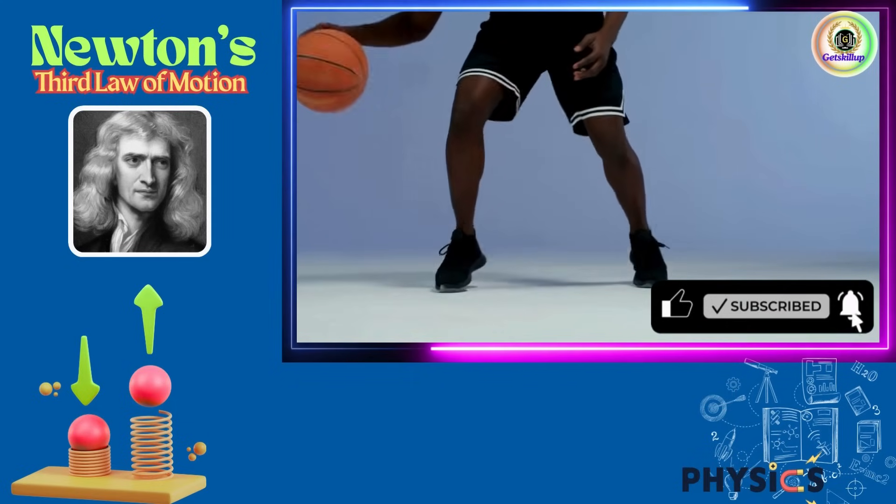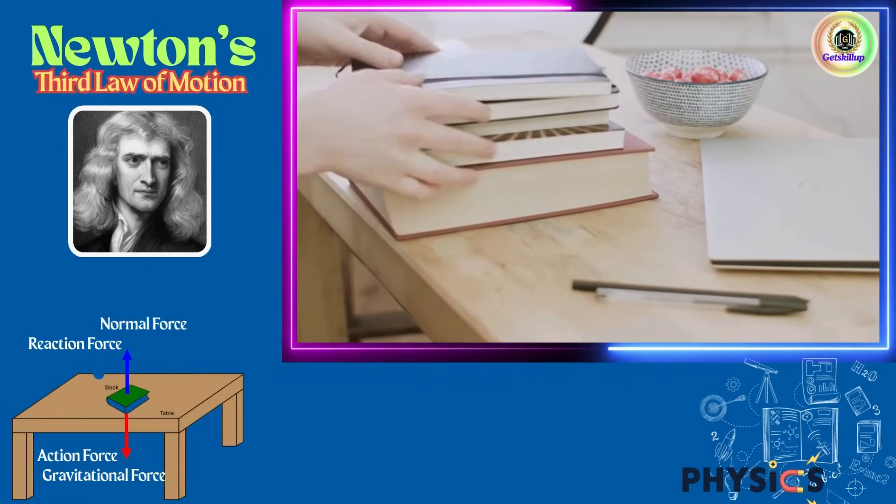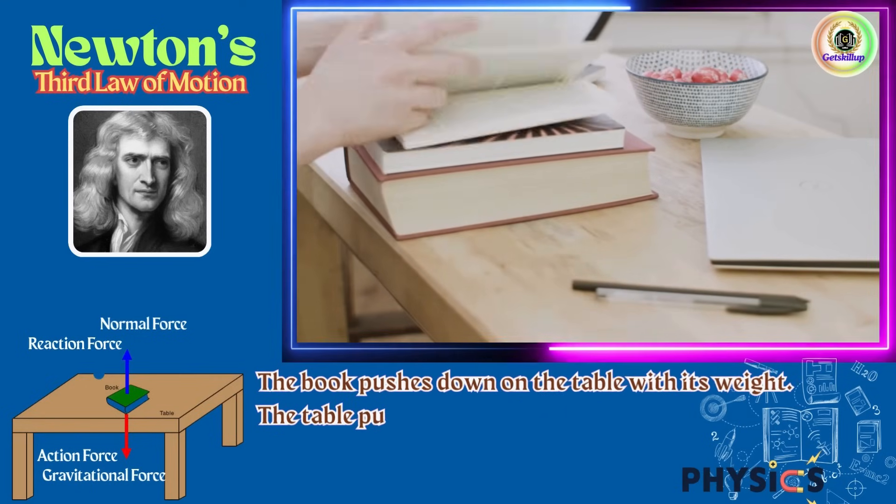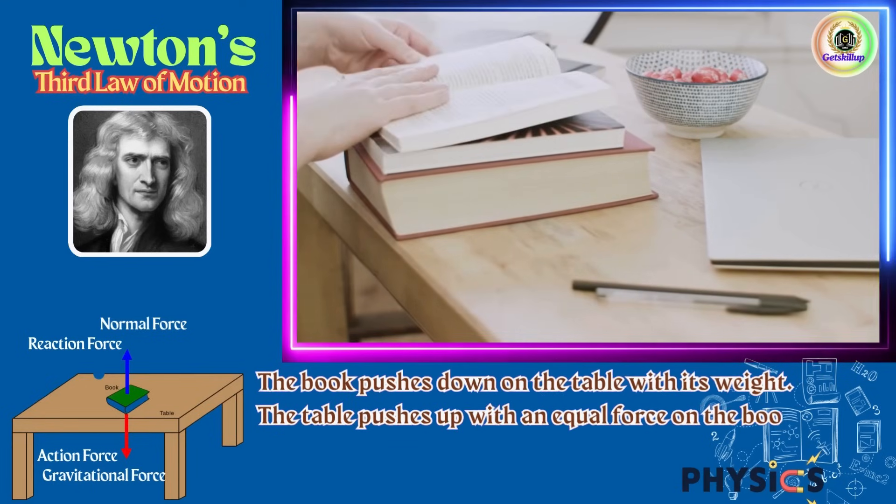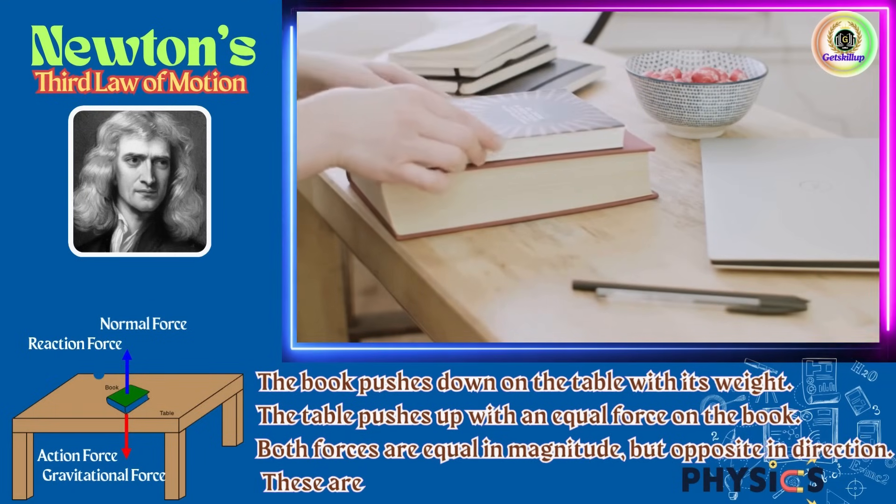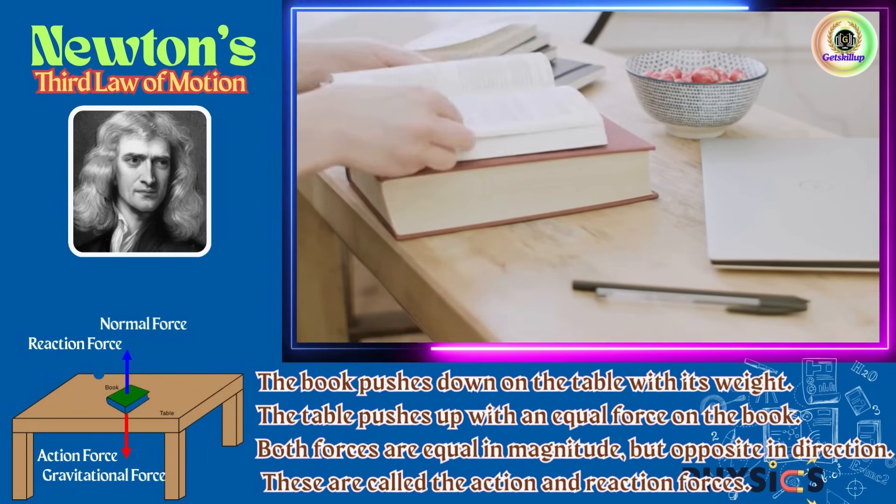Let's start with a simple example. Place a book on a table. The book pushes down on the table with its weight. The table pushes up with an equal force on the book. Both forces are equal in magnitude but opposite in direction. These are called the action and reaction forces.